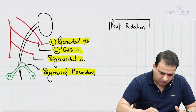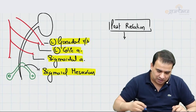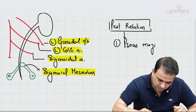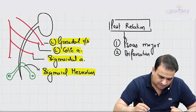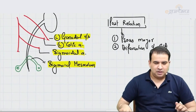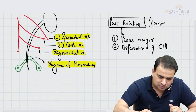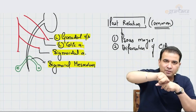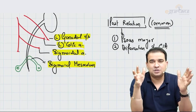The posterior relation is common for both right and left ureters. The ureter runs on the psoas major muscle, and then passes in front of the bifurcation of the common iliac artery, where it moves forward into the pelvis. These are the important relations of the ureter.